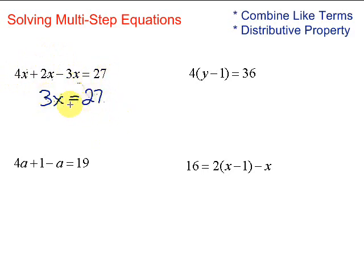Then, this should look very familiar. We have 3x, which means 3 times x. To get rid of the times 3, we divide by 3. Do the opposite. So divide by 3 on both sides. We're left with x equals 9.